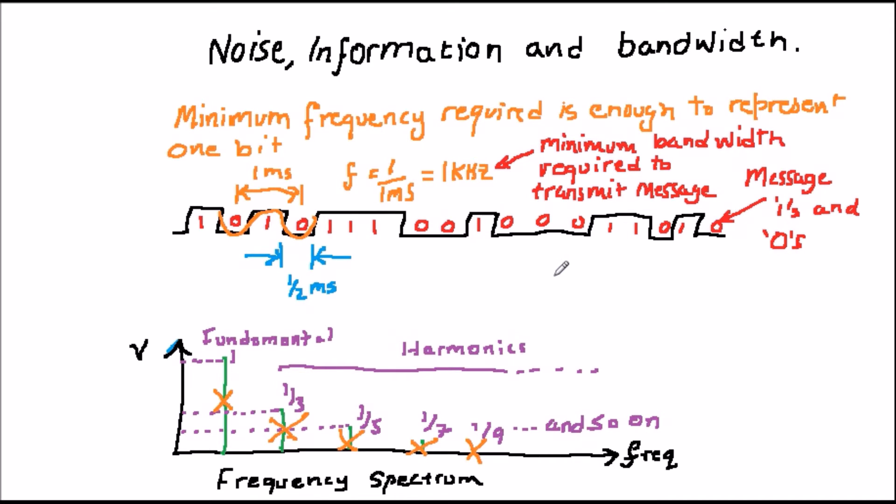Now from the last video, we saw that the minimum detectable signal is defined by the noise floor of the system. The signal must be greater than the noise in order to be detectable. But you may remember that the formula for thermal noise, or Johnson noise, has a bandwidth associated with it. You can see from the formula that to minimize the noise, we want to minimize the bandwidth.